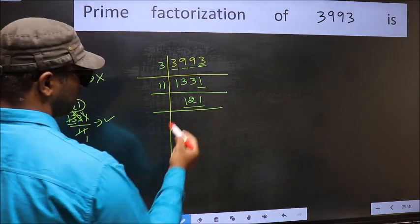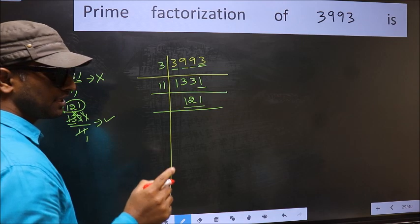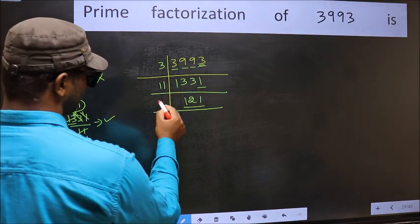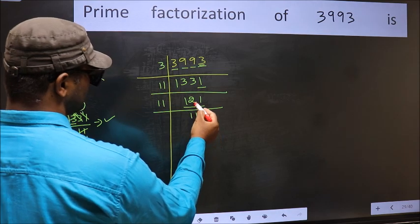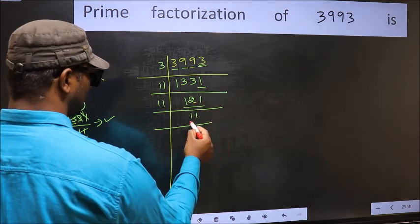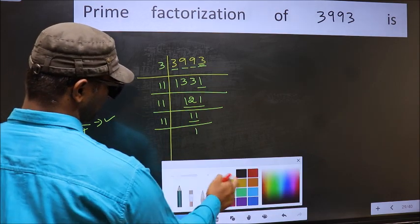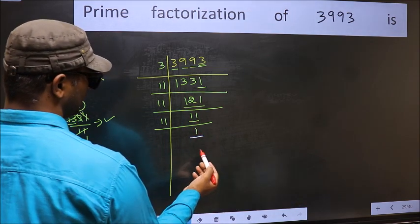Now we have 121. Always remember, 11 times 11 is 121. So we have 11. 11 is a prime number, so 11 once is 11. We get 1 here.